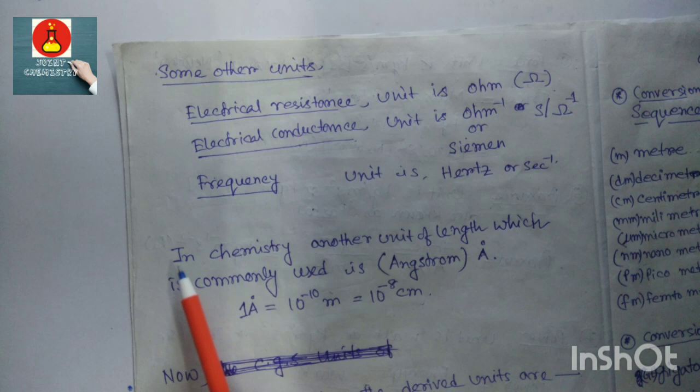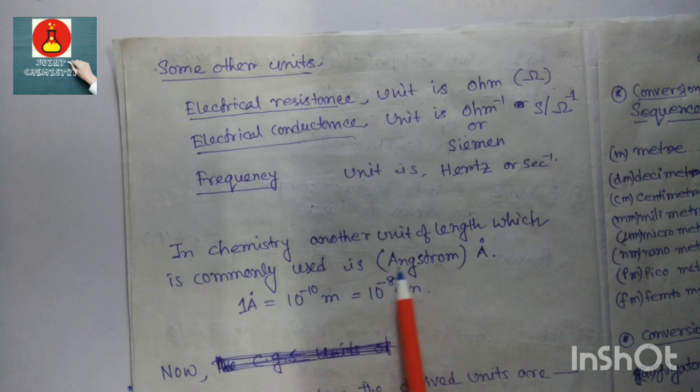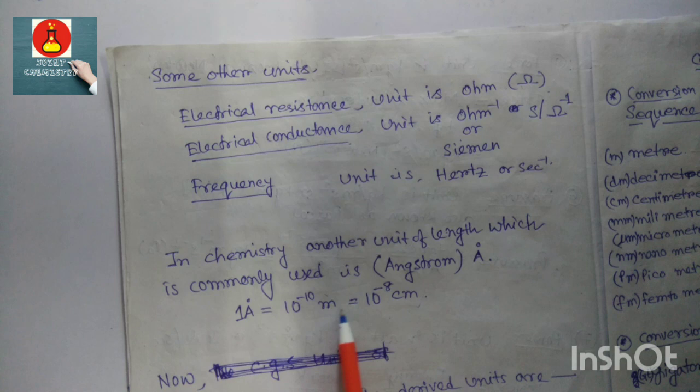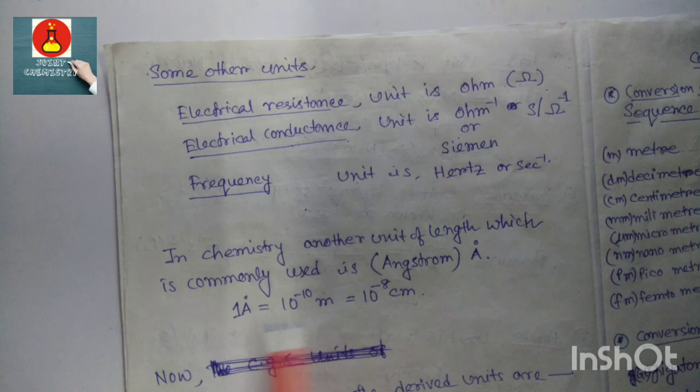In chemistry, another unit of length commonly used is the angstrom, with symbol Å. One angstrom equals 10⁻¹⁰ meter, which is also equal to 10⁻⁸ centimeter. This is a very important relation to remember.